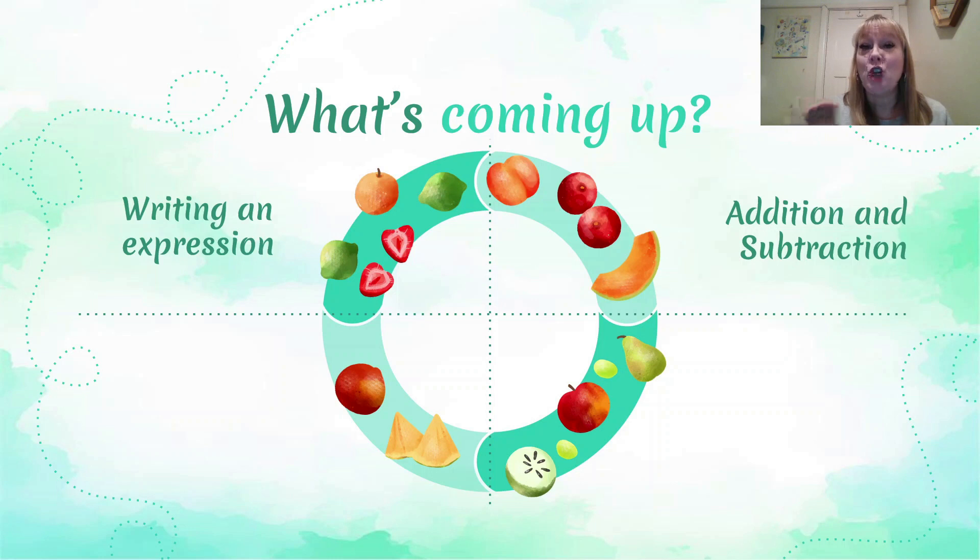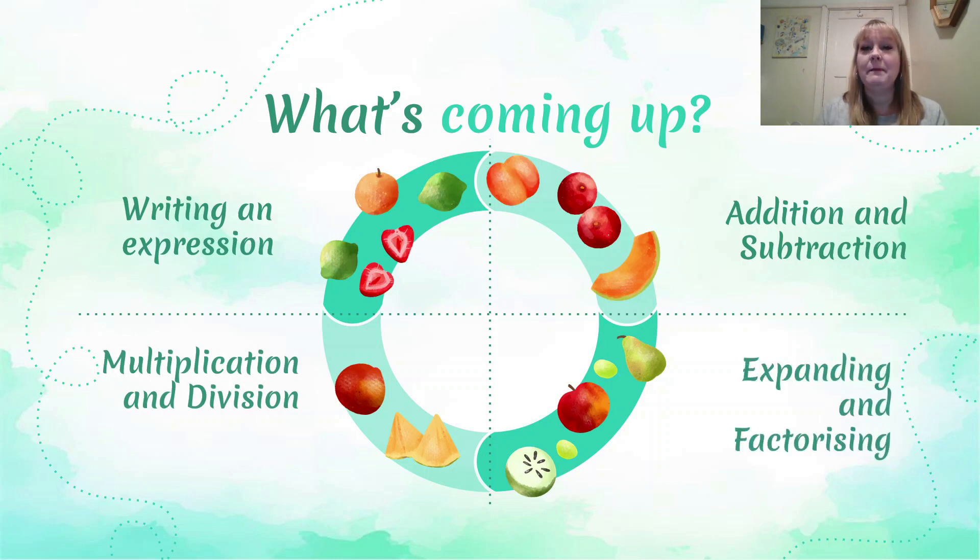A little hint here for coming up: you can only add and subtract like terms. So a three cannot be added to an x. They can't just become 3x together because they're not like terms. We're going to talk a lot more about that in our upcoming video. Multiplying and dividing with some algebra, expanding and factorizing, and loads more. There's lots coming up in this algebraic techniques series.